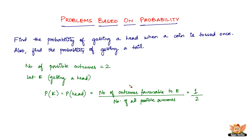This is a very simple introduction to the concept of probability. Probability is all about the favorable outcome out of the total number of possible outcomes — that's the main idea. This ends the introduction problem video on probability; I'll see you in the forthcoming videos with more problems based on probability.